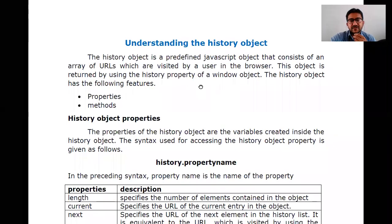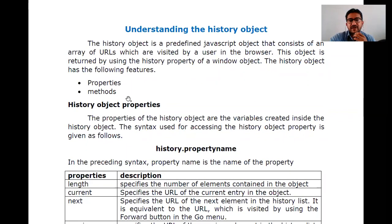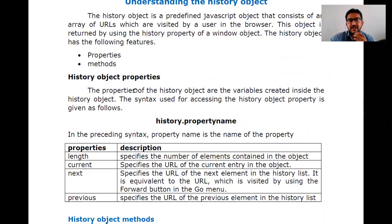The next one is the history object. As mentioned, for every topic in this window object we have properties, collections, and methods. The purpose of this history object is to manage the previous browsing history of things in that window, for any type of browser. To access that, we are going to use this history object.